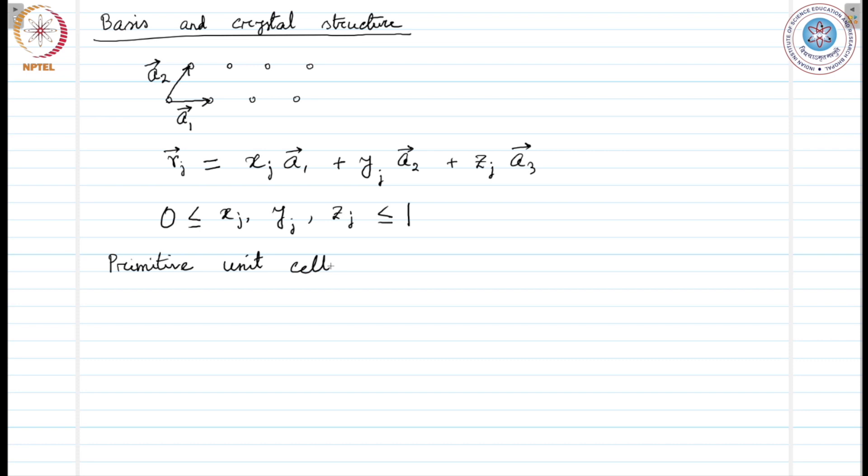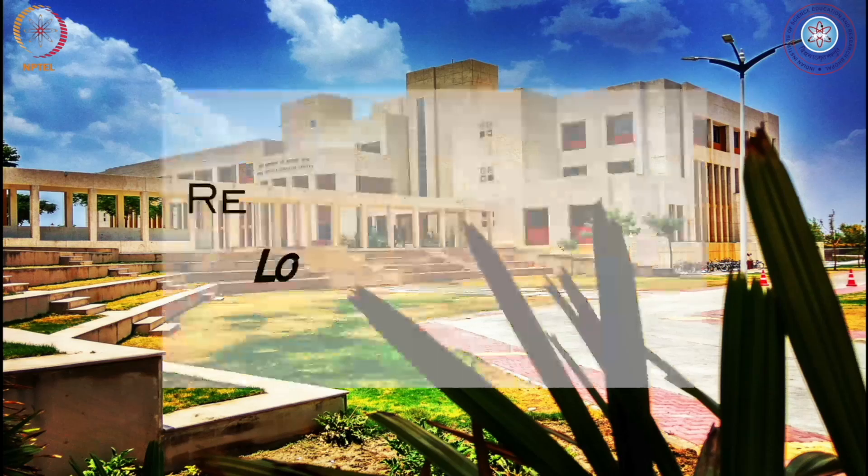There are many ways of choosing the primitive axis and the primitive cell for a given lattice, but the number of atoms for a primitive lattice or primitive basis is always the same for a given crystal structure. There is always one lattice point per primitive cell. I did not mean one atom, just one lattice point. With that lattice point, there may be multiple atoms attached.